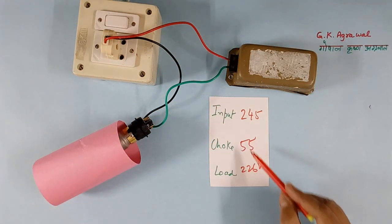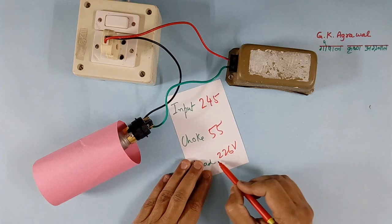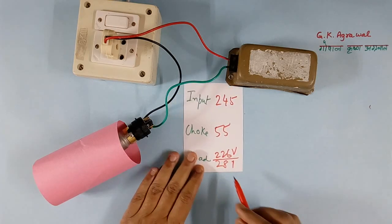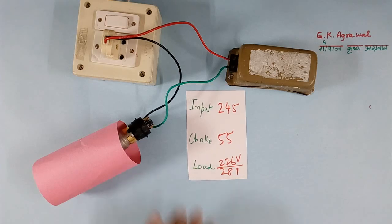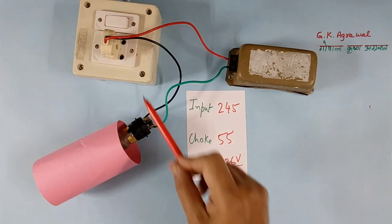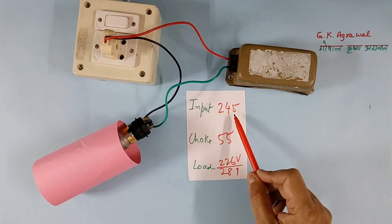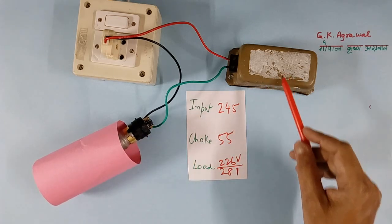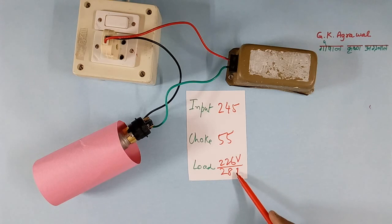Now if we add these two, we get 281V. This means input supply is 245V, but total voltage across this and this, if we add linearly, it comes 281V. This is because of vector summation. I will show how.